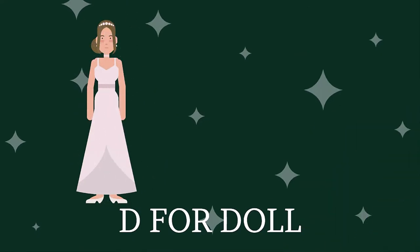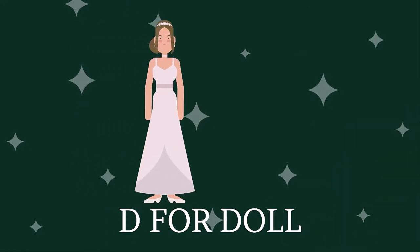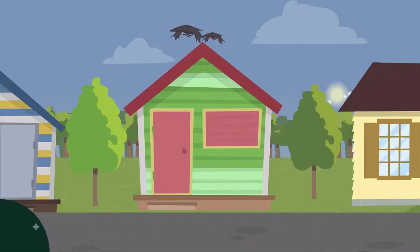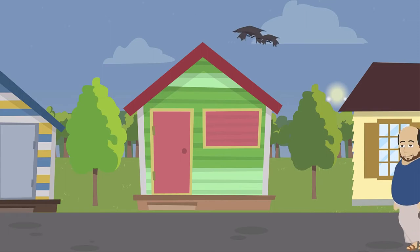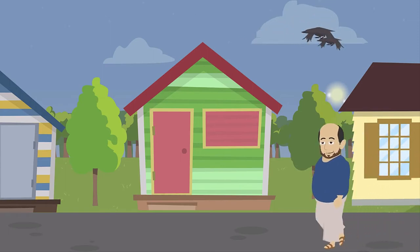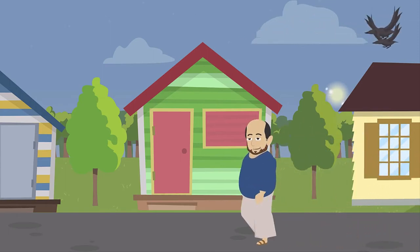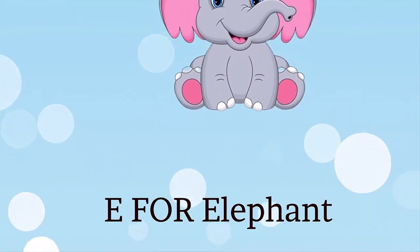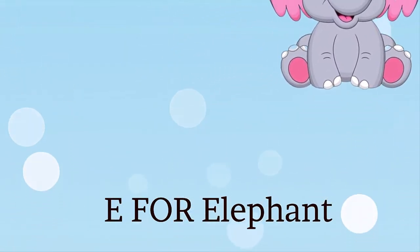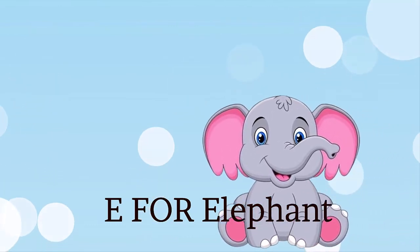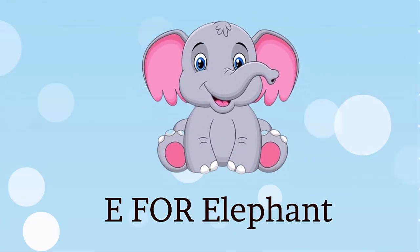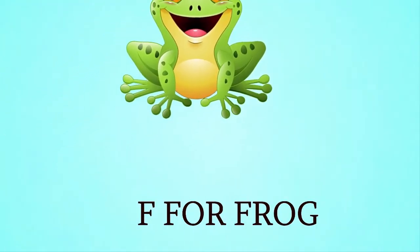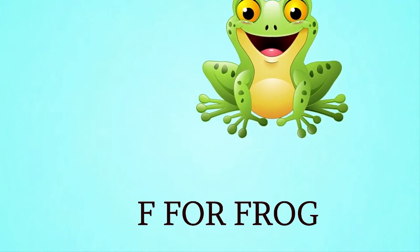D is for doll, d-d-doll. E is for elephant, e-e-elephant. F is for frog, f-f-frog.